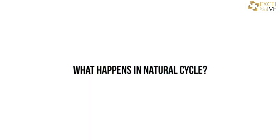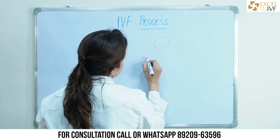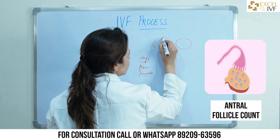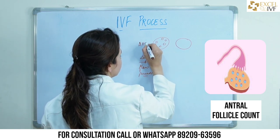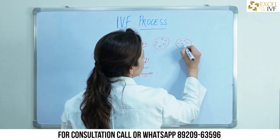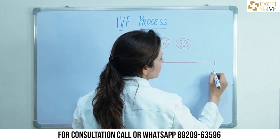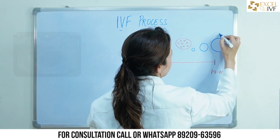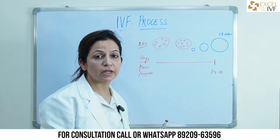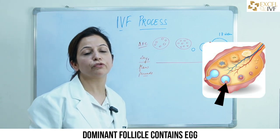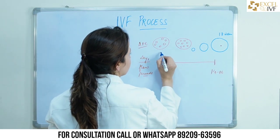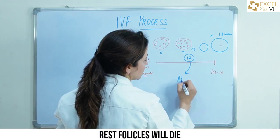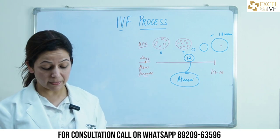Starting with the first thing, it is important that we understand what exactly goes on in the body of a female in a natural cycle. On day one of the cycle, which is the first day of periods, if we do an ultrasound of the two ovaries, we will find small tiny follicles called the antral follicles. As the cycle progresses, around day 14 to 16, one follicle will develop and mature to a size of around 18 to 20 mm, containing the egg or female gamete. The remaining antral follicles — say six in one ovary and seven in the other — will undergo atresia, meaning they die out or get wasted.